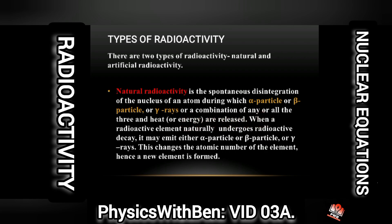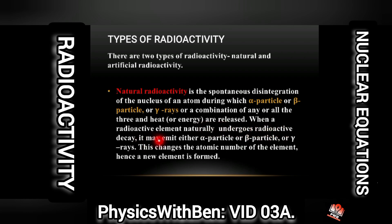Anytime you see a nuclear equation or a radiation involving an alpha particle, a beta particle, or a gamma ray, that radiation is typically natural radioactivity. When a radioactive element naturally undergoes radioactive decay, it may emit either an alpha particle, a beta particle, or gamma rays. This changes the atomic number of the element and hence a new element is formed.